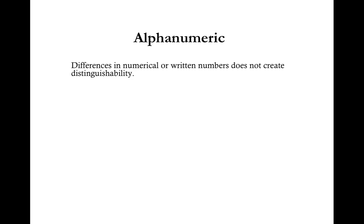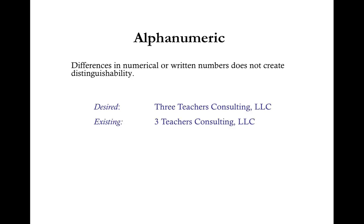Alphanumeric: Differences in numerical or written numbers do not create distinguishability. For example, if your desired LLC name is Three Teachers Consulting LLC with the number 3 spelled out, but during your search you find a company called Three Teachers Consulting LLC with the numeral 3, the state does not consider these different and your desired name would not be available. An alternative would be A Few Good Teachers Consulting LLC.